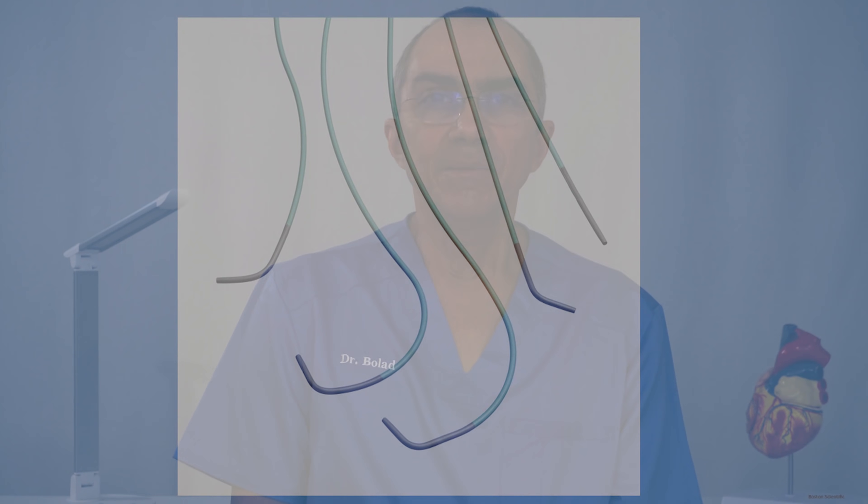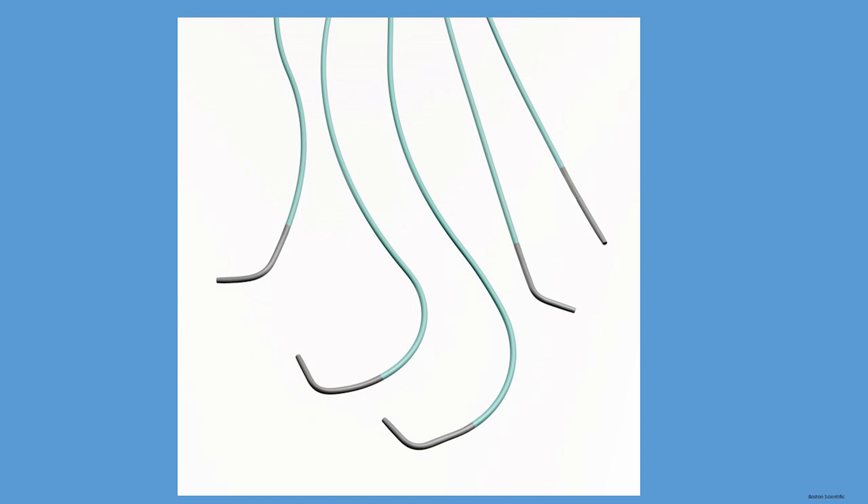Through the sheath in the femoral artery or the radial artery, longer catheters are passed all the way to the heart over a longer wire, guided by the x-ray machine. The image shows different catheter types that we use regularly when performing this procedure. The tip of one of these catheters is then guided to the opening or origin of one of the coronary arteries of the heart.